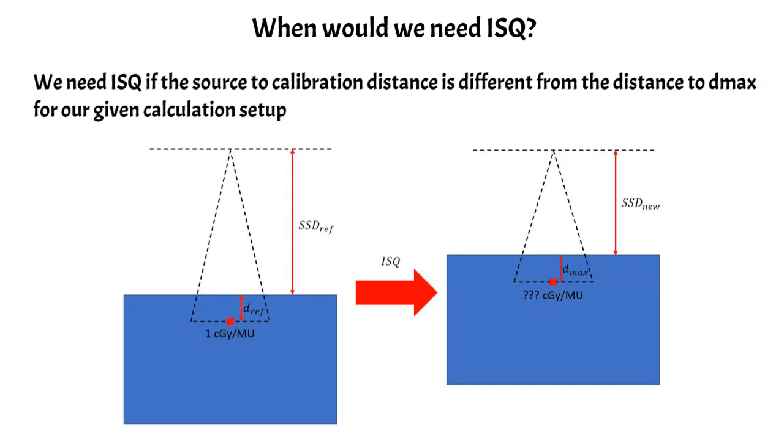So that's a little explanation showing when you might need an inverse square factor. But in most cases, if you're using the PDD formalism, you're likely to be set up to 100 centimeters SSD, which is what our PDD was measured at. So you probably wouldn't need one, but it's important to note that if you apply this formalism to other SSDs, you would need an inverse square correction. And if you're at a different SSD, you'd also need to convert your PDD to the correct SSD using the Maynard factor because the PDD is dependent on what SSD you're at.